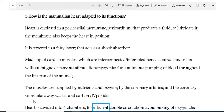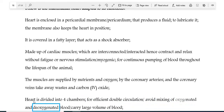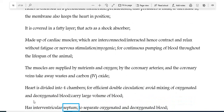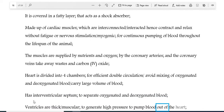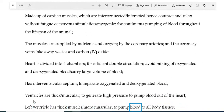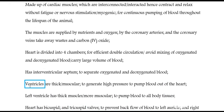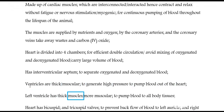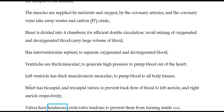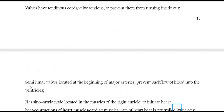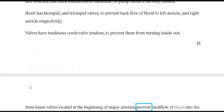The heart is divided into four chambers for efficient double circulation, avoiding mixing of oxygenated and deoxygenated blood, and to carry a large volume of blood. It has an interventricular septum to separate oxygenated and deoxygenated blood. Ventricles are thick and muscular to generate high pressure to pump blood out of the heart. The left ventricle has thicker and more muscular walls to pump blood to all body tissues. The heart has bicuspid and tricuspid valves to prevent backflow of blood to the left auricle and right auricle respectively. Valves have tendinous cords to prevent them from turning inside-out. Semi-lunar valves located at the beginning of major arteries prevent backflow of blood into the ventricles.